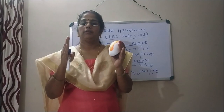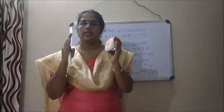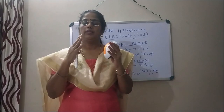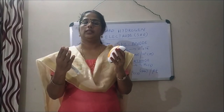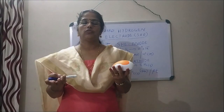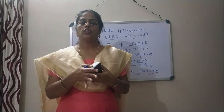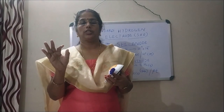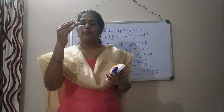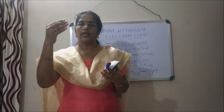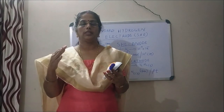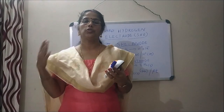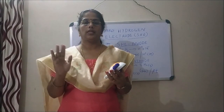The electrochemical series can also be called the activity series. The elements or parameters are arranged in the electrochemical series in increasing or decreasing order of their standard reduction potentials.